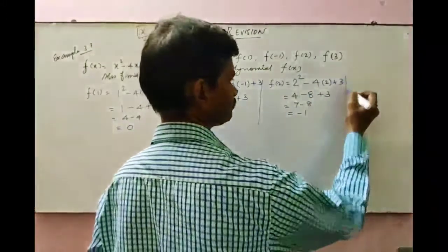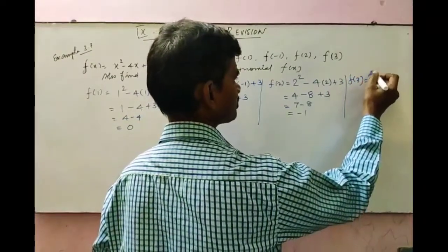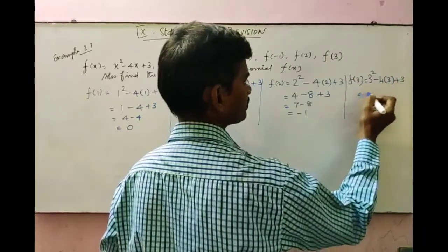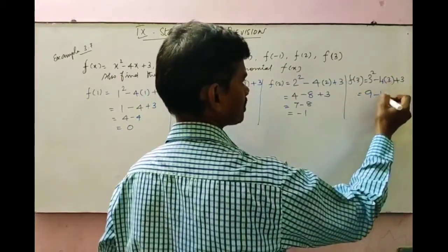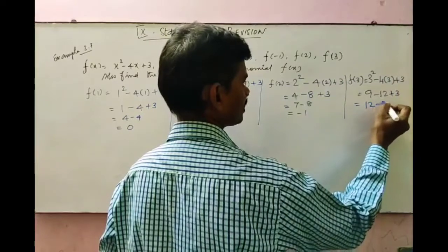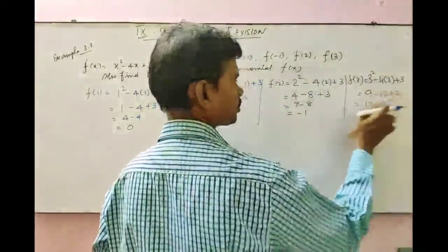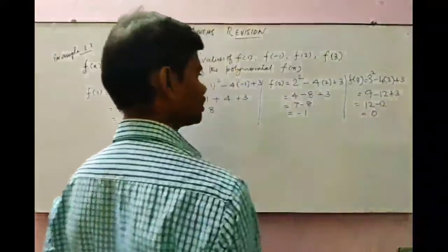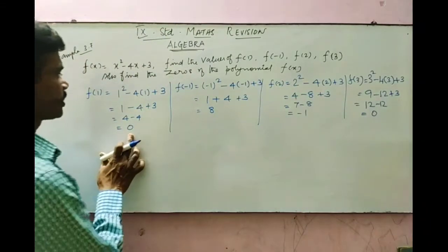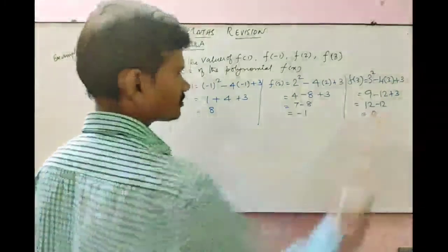The last one is f of 3. That is 3 squared minus 4 times 3 plus 3. 3 squared is 9. 4 times 3 is 12. So 9 minus 12 plus 3: 9 plus 3 is 12, and 12 minus 12 gives 0. So f of 3 equals 0.